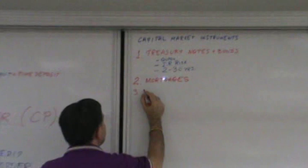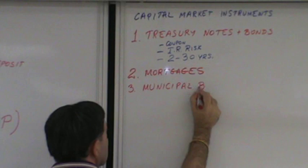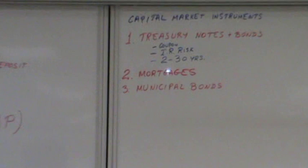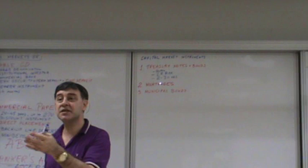Number three. Municipal bonds. We've already studied this before. It is simply a bond issued by a local government, like a state or municipality.